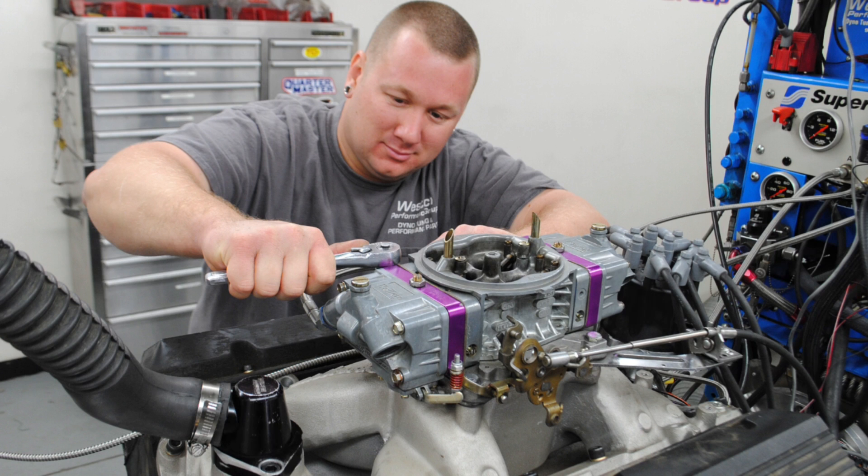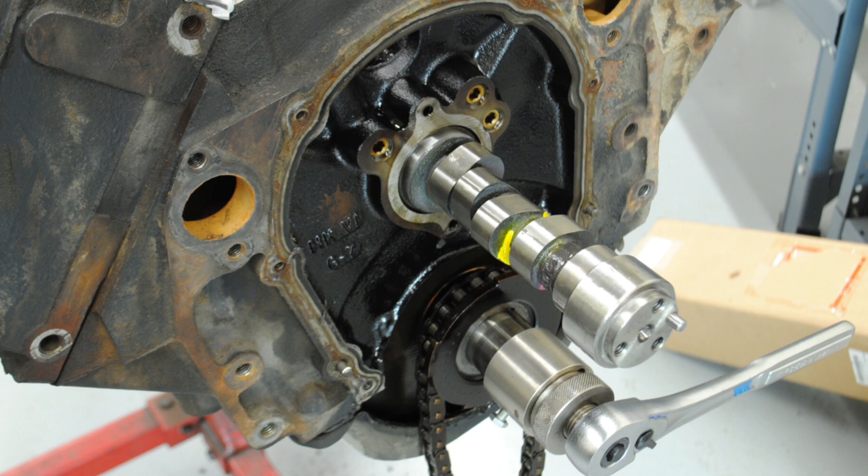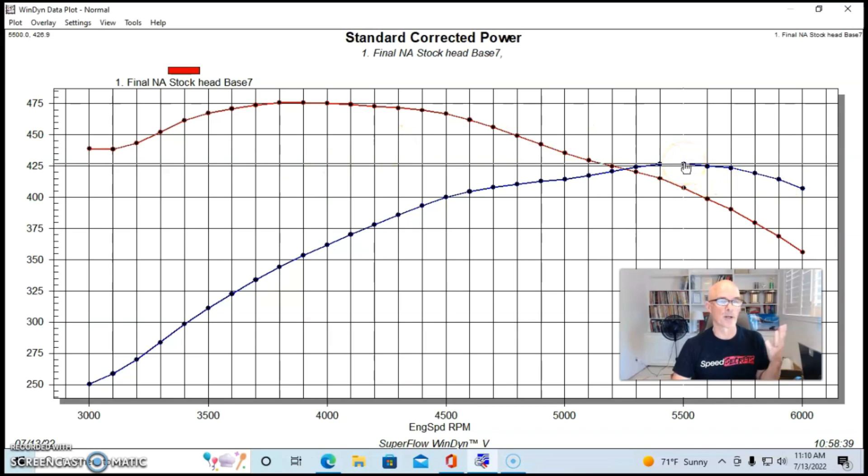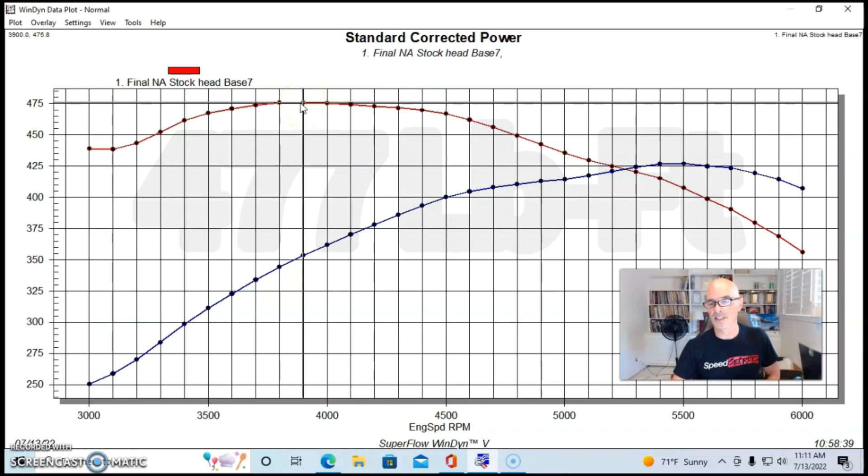The difference between the fuel injection and the dual plane intake manifold was not dramatic. The EFI combination made a little bit more low speed power and the carburetor made a little bit more on top. When we put a camshaft that fits in with the available piston to valve clearance, we get something that makes around 425 horsepower. This one made 427 horsepower. Peak torque checked in at 476 foot-pounds of torque.